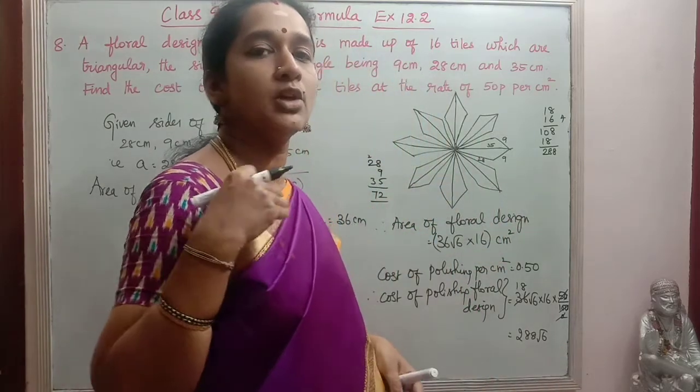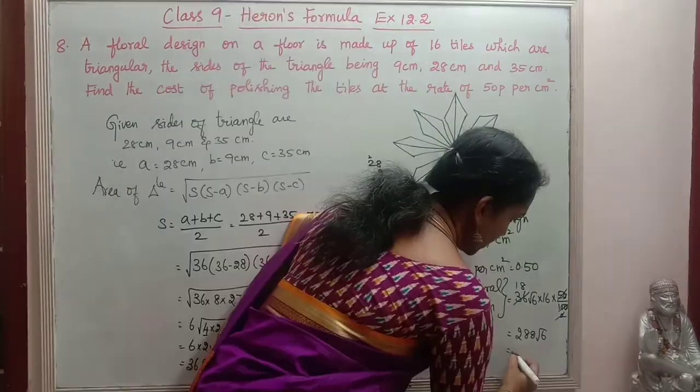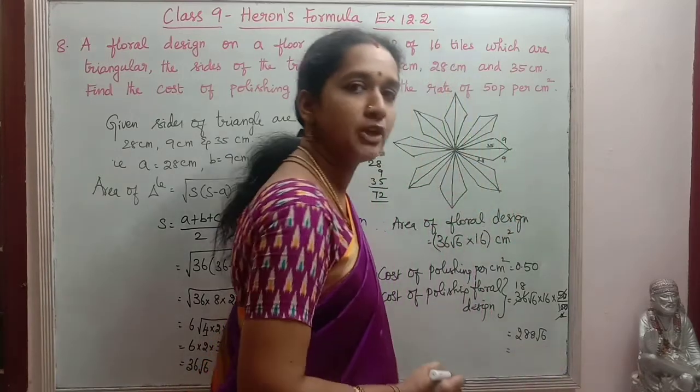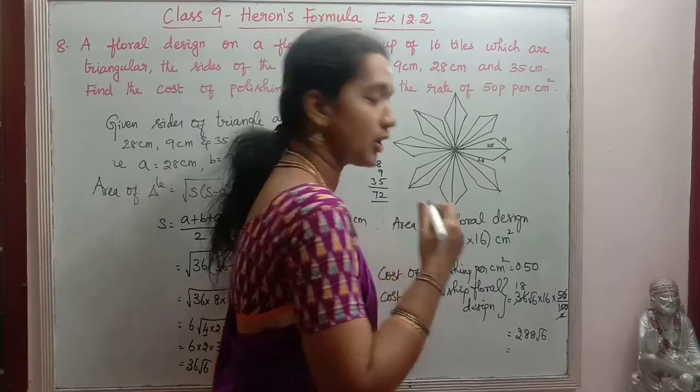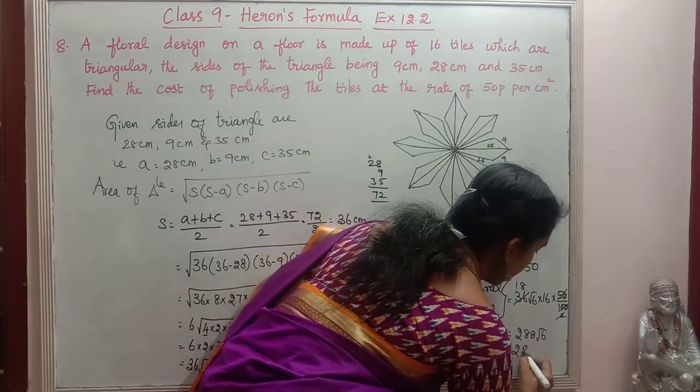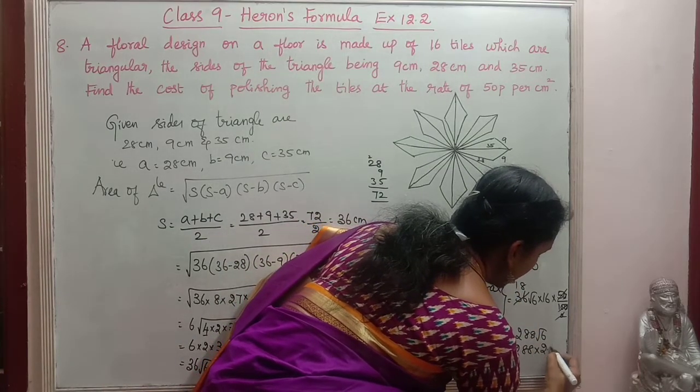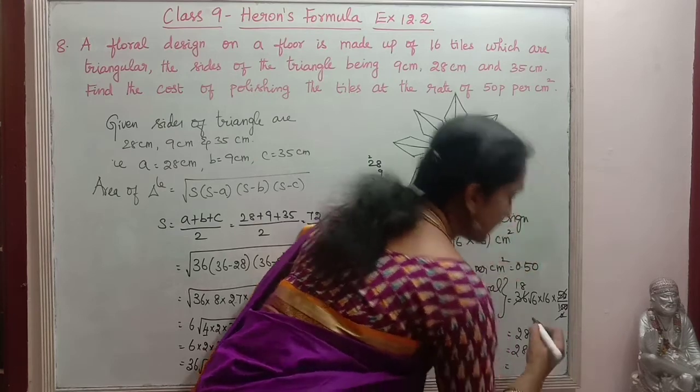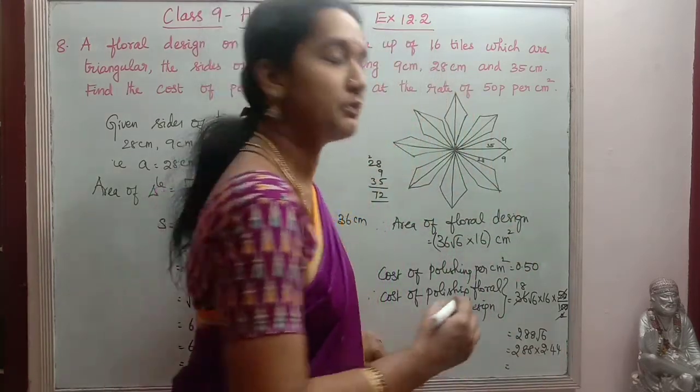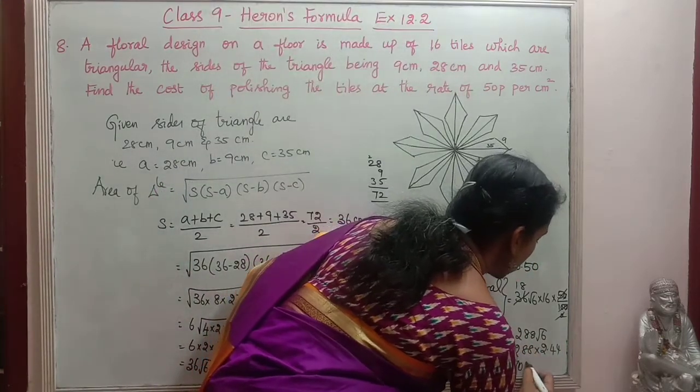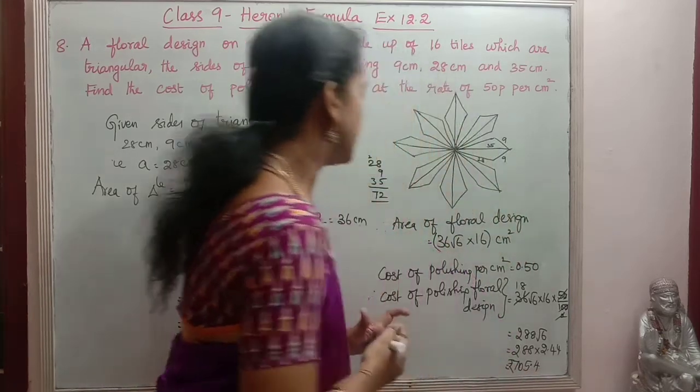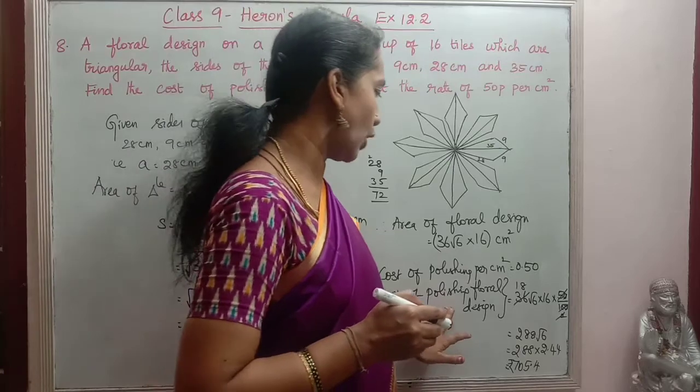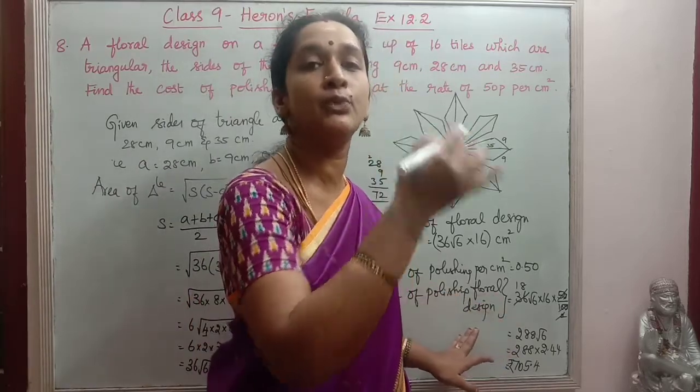So this root 6 also we will simplify. Is equal to root 6 value is 2.44. When we find the square root, we will get it as 2.44. So 288 into 2.44. The value is 705.4.